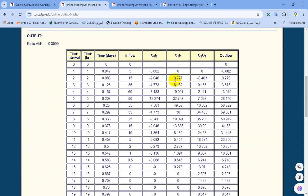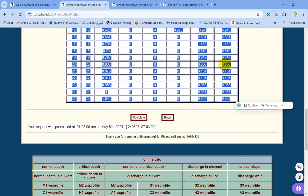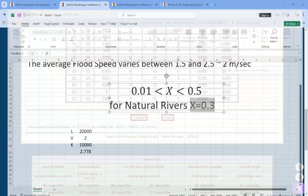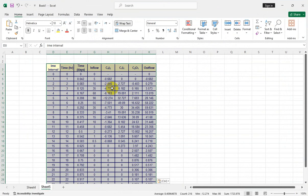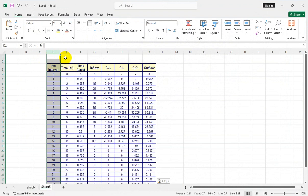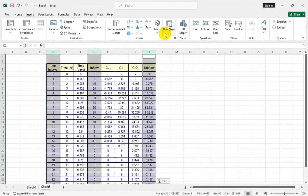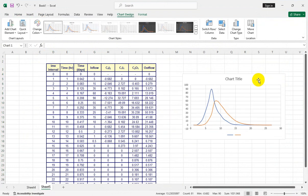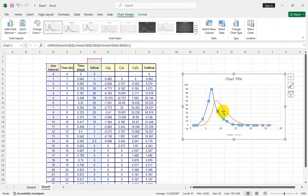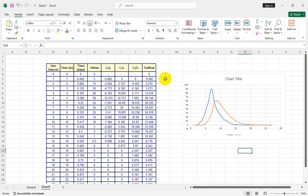After a while, the table appears and all calculations are automatically calculated for your case study. Let me copy all of these parameters and go to Excel and paste them. This is the inflow and this is the outflow hydrograph.